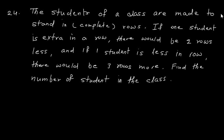Namaste everyone. Welcome to the class again. Now let us see question number 24. The students of a class are made to stand in rows. If one student is extra in a row, there would be two rows less, and if one student is less in a row, there would be three rows more. Find the number of students in the class.